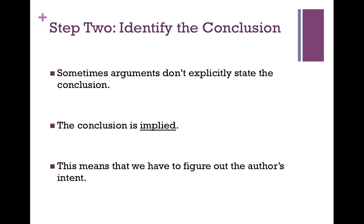There's one final thing I want to talk about with regard to identifying conclusions. I said that typically people making arguments want to advertise their conclusion — that's what they're trying to sell you on. But this is not always the case, and it can be really obnoxious sometimes. A person is making an argument, they seem to be implying something, but they never come out and explicitly state it. When this occurs — when a person is making an argument but doesn't outright state their conclusion — we have what we call an implied conclusion. When this occurs, we have to do a little bit of detective work.